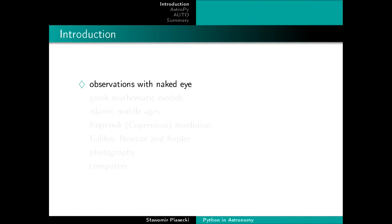Astronomy is one of the oldest sciences and the first observations were taken by the naked eye. Asian civilizations like Babylonians, Maya, Greeks, and Egyptians used only the eye to check what was happening in the night sky. They used this information mostly for navigation, creating simple calendars, agriculture, and religion — for example, once you knew when a solar eclipse would occur, you could tell people the gods were angry.